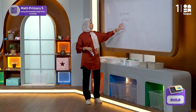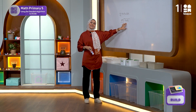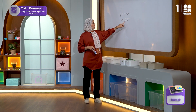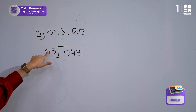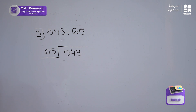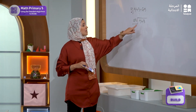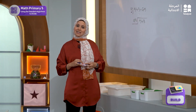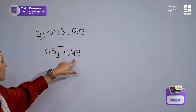I'm going to start by taking the first two digits. If I try 54 divided by 65, I cannot, because 54 is less than 65. So I will take the full number 543.